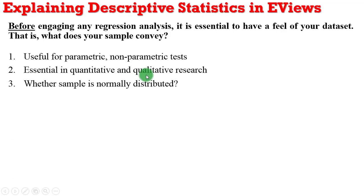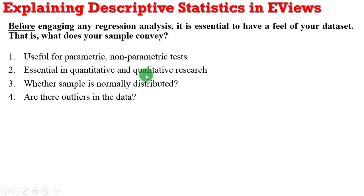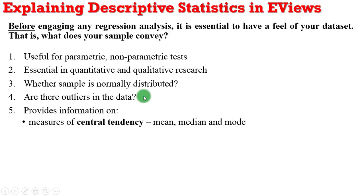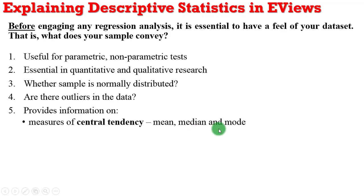It can easily tell you whether your sample is normally distributed and whether there are outliers in the data. Other information you can obtain includes measures of central tendency — knowing the values for the mean, the median, and the mode.